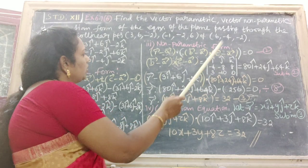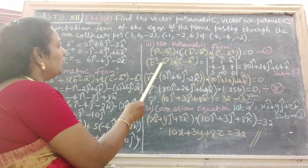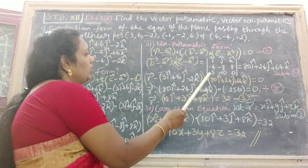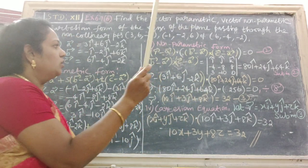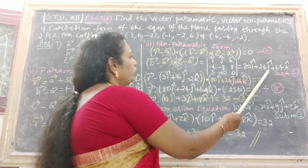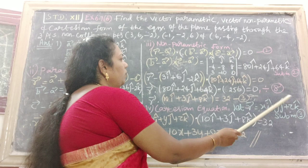I cap, J cap, K cap. Substitute the coefficient of I, J, K in B vector minus A vector here, and C vector minus A vector is here. Then applying the method, we get 80 I cap plus 24 J cap plus 64 K cap.